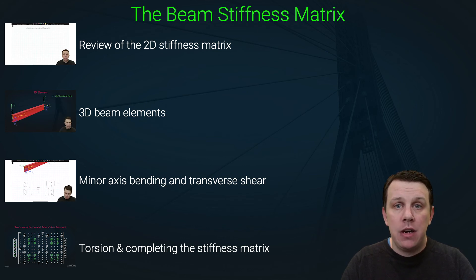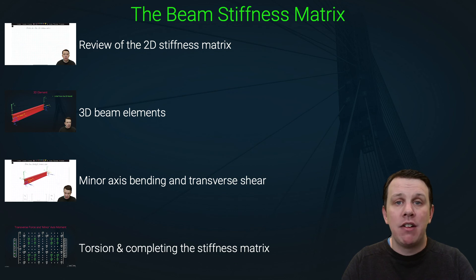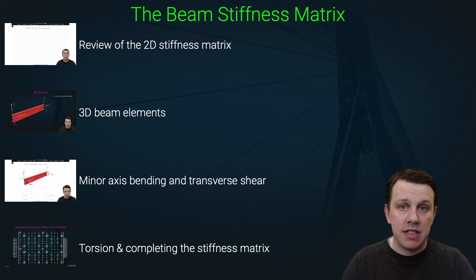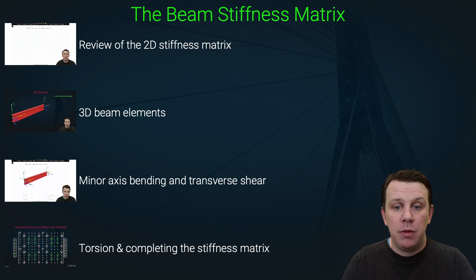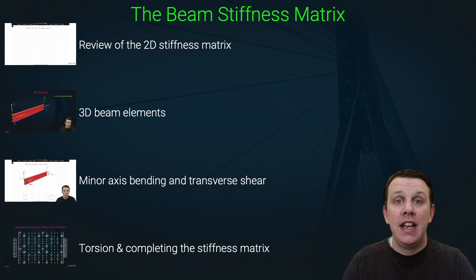In the final two lectures, we'll finish out by building in minor axis bending and torsion into our stiffness matrix. At that point, we'll have completed a big milestone and we'll have a stiffness matrix that we can deploy later on in our code.